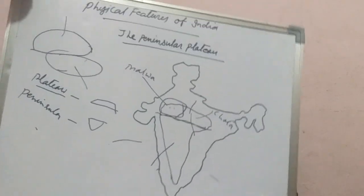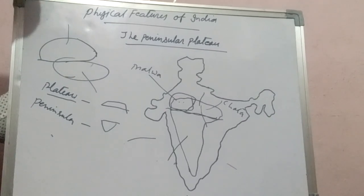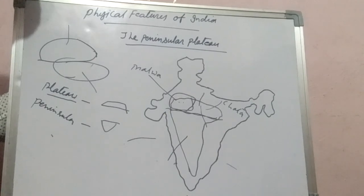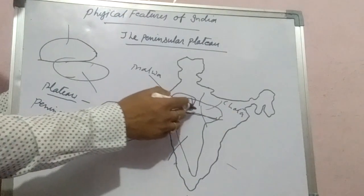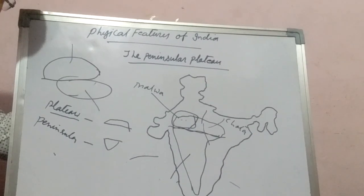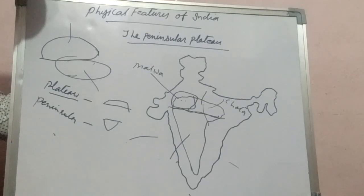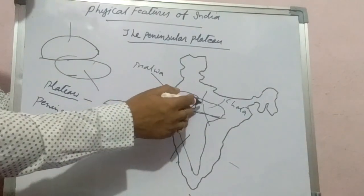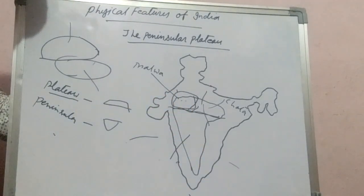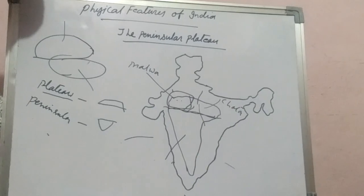The part of the Peninsular Plateau lying to the north of the Narmada River, covering a major area of the Malwa Plateau, is known as the Central Highland. The Vindhyachal Range bounds the Central Highland on the south and the Aravalli Range on the northwest. The further westward extension gradually merges with the sandy and rocky desert of Rajasthan.